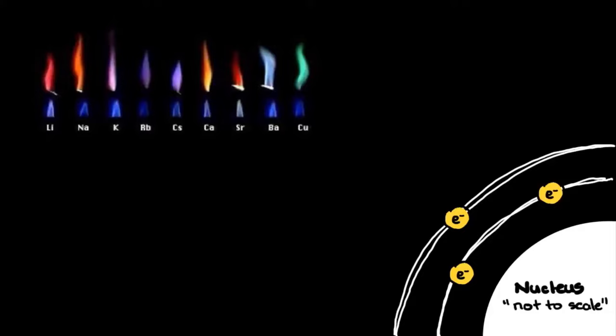When a metal salt is vaporized in a flame, the outer shell electrons of the metal ion may absorb energy and move to a higher, excited energy level.